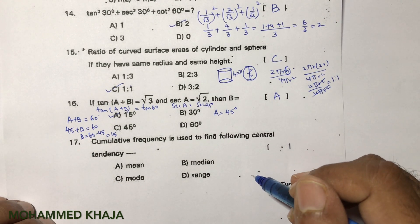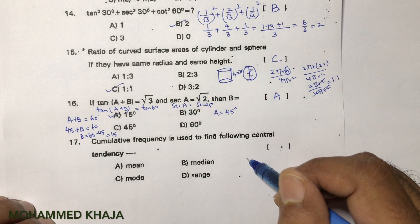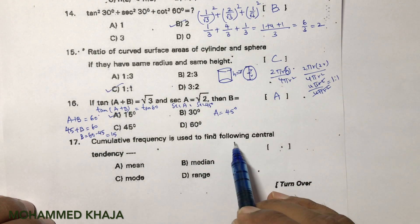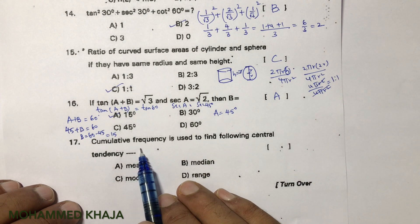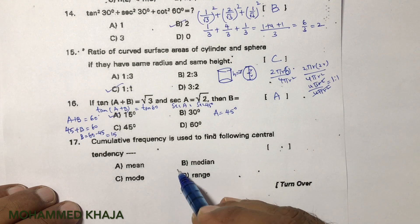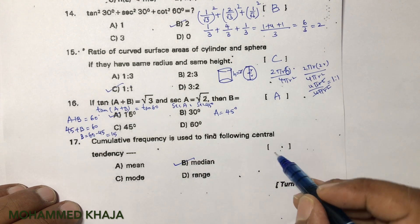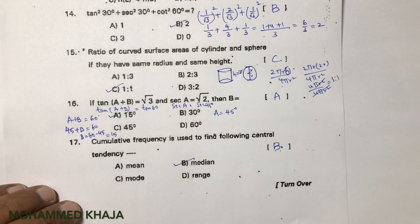Cumulative frequency is used to find which central tendency? Cumulative frequency is used to calculate the median. The correct option is B.